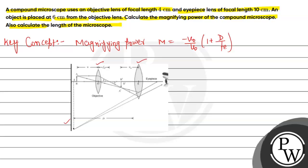The object is placed at a distance of 6 cm from the objective lens, so U0 is given as minus 6 cm. The focal length of the objective lens, F0, is given as 4 cm. The focal length of the eye lens, Fe, is given as 10 cm. Since we use convex lenses, both focal lengths are positive.